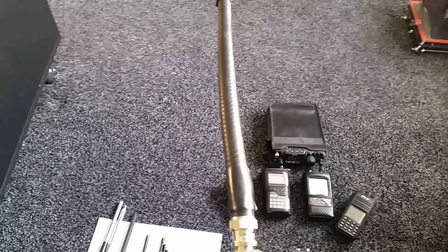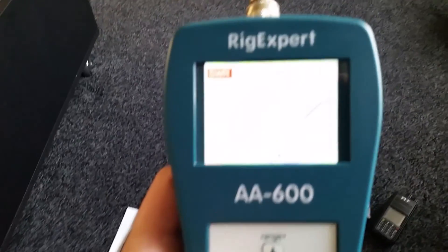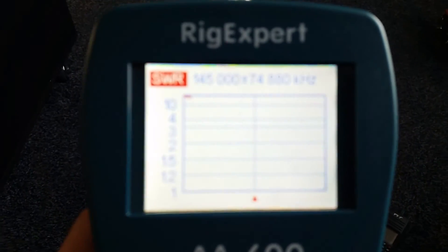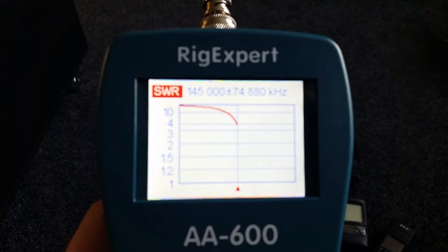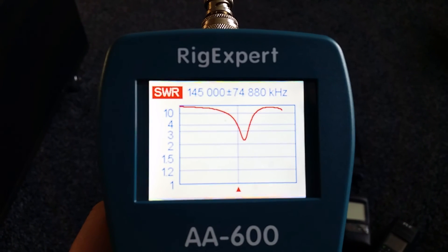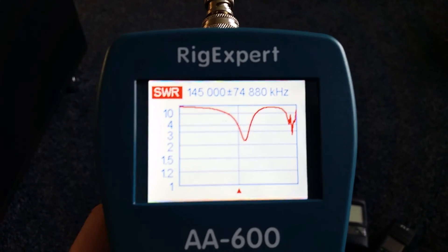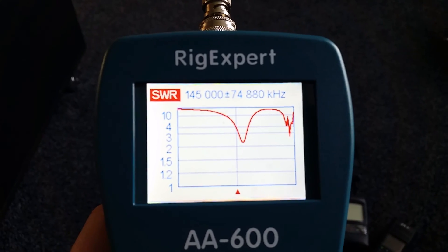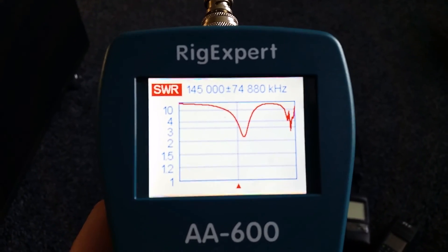The next antenna we're going to try is off an FT290. That's also slightly higher in frequency, and it's about 2.3, 2.2.